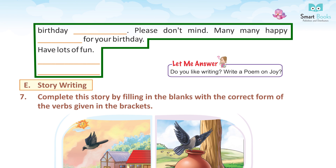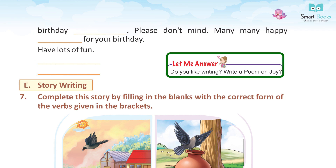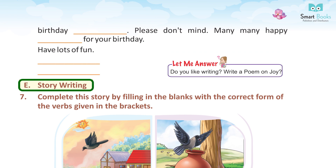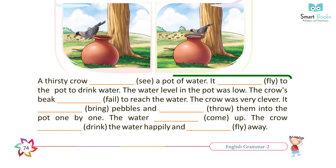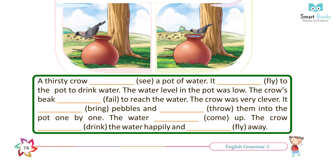Do you like writing? Write a poem on joy. E. Story Writing. Exercise seven: Complete this story by filling in the blanks with the correct form of the verbs given in the brackets. A thirsty crow saw a pot of water. It flew to the pot to drink water. The water level in the pot was low. The crow's beak failed to reach the water. The crow was very clever. It brought pebbles and threw them into the pot one by one. The water came up. The crow drank the water happily and flew away.